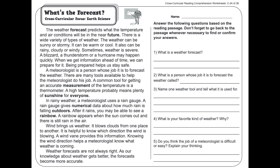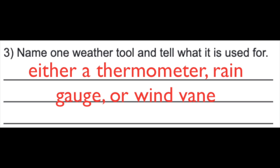Now I want you to name one weather tool and say what it's used for. If you said a thermometer, it would be used to determine air temperature. If you said a rain gauge, it determines the amount of rain that fell, or precipitation. Or if you said a wind vane, that would help you find the direction of the wind.